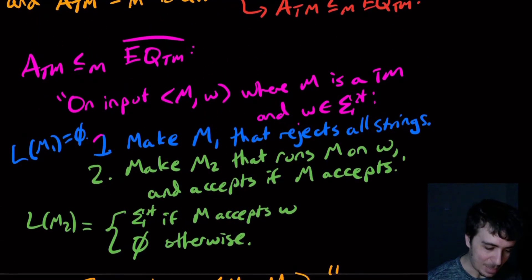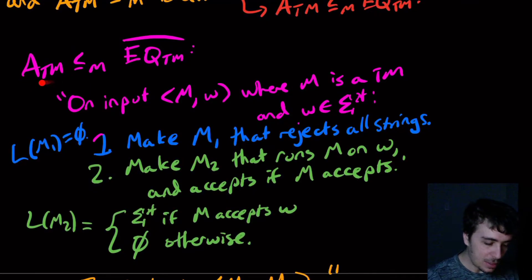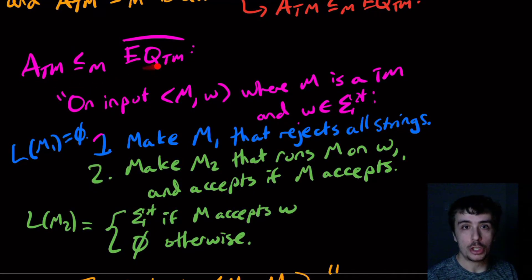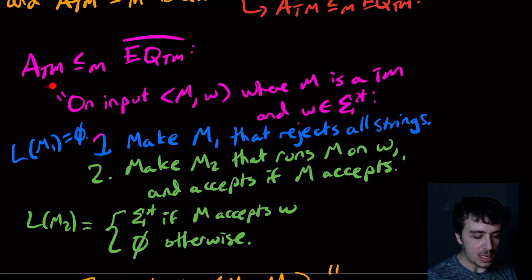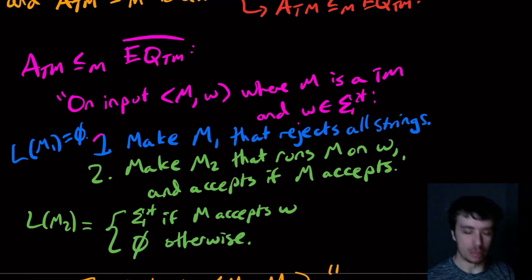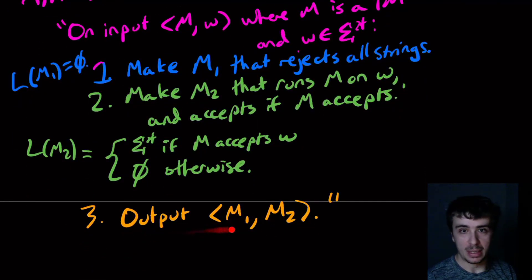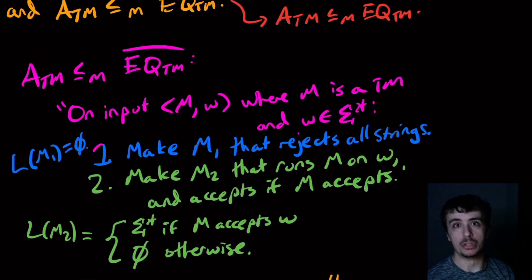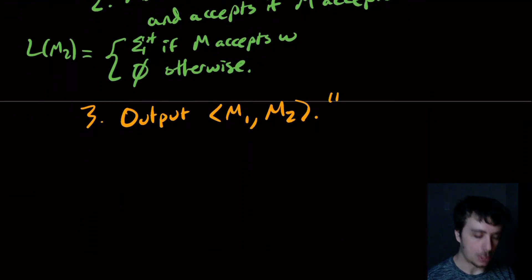To clarify: if M accepted w then the two machines are not the same, meaning the output is in EQTM complement. If M does not accept w, the two machines are equivalent, so the output is not in EQTM complement. This is a valid mapping reduction, so ATM mapping reduces to EQTM complement.